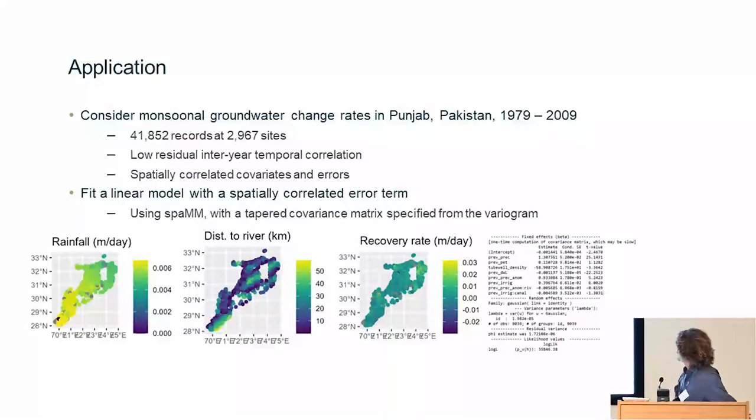So I've applied this to a dataset in Punjab of Pakistan, where we have 42,000 records, lots of covariates, and this calculates in a few hours a model fit which is physically reasonable.